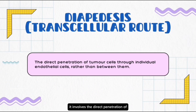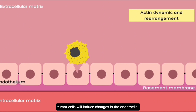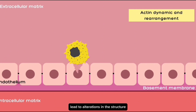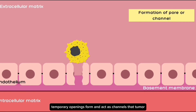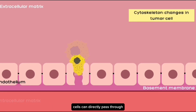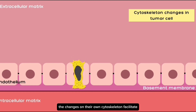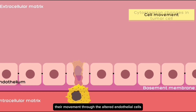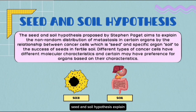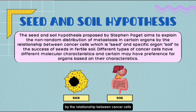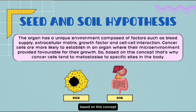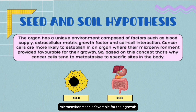For the transcellular route, it involves the direct penetration of tumor cells through individual endothelial cells. Tumor cells induce changes in the endothelial cells they interact with through signaling events that alter the structure and function of those cells. Temporary openings form and act as channels that tumor cells can directly pass through, and changes in their own cytoskeleton facilitate free movement through the altered endothelial cells to the secondary tumor. The seed and soil hypothesis explains the distribution of metastasis to certain organs by the relationship between cancer cells — the seed — and specific organ microenvironments — the soil — where cancer cells tend to metastasize to sites where the microenvironment is favorable for their growth.